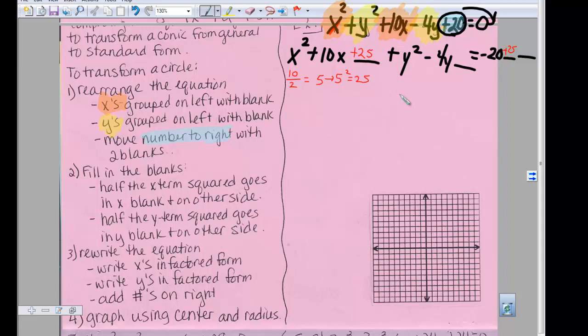Now I do the same thing with the y's. Take the b term, which is negative 4, divide it by 2, and I get negative 2. We take negative 2 and we square it and we get positive 4. So I take positive 4 and I add it to both sides. So now I have completed this square, filled in the blanks, and if you notice, this piece here and this piece here make up perfect square trinomials. And we talked about this also last semester.